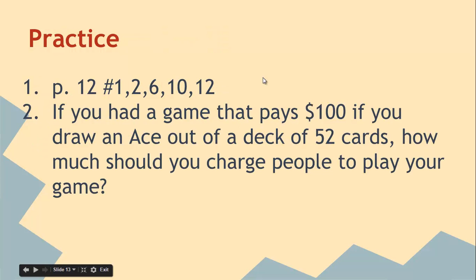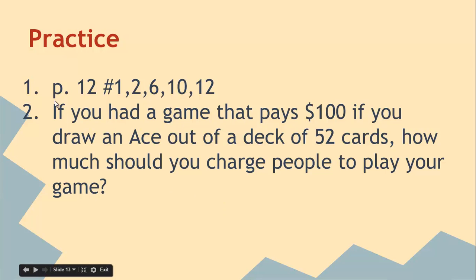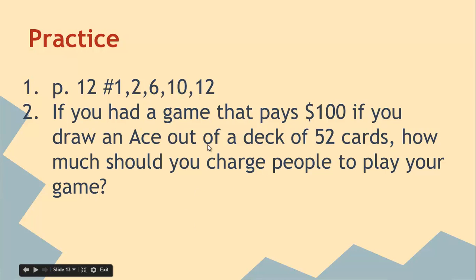Here are some homework questions to practice. Tomorrow we'll continue with learning target 1 and take a closer look at this notation. There's another question in the slides: if you had a game that pays $100 when you draw an ace, how much should you charge people to play? Think about the dice example and really work through it, since we went through that relatively quickly.